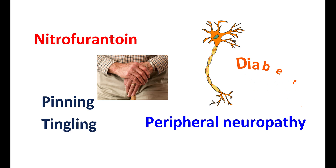In people with diabetes and electrolyte imbalance, this condition may be more elevated. Vitamin B deficiency can also increase the risk of peripheral neuropathy, and people with anemia are also at more risk for developing this condition.